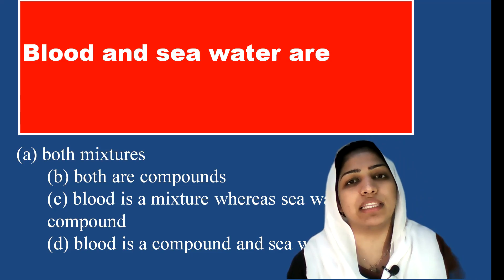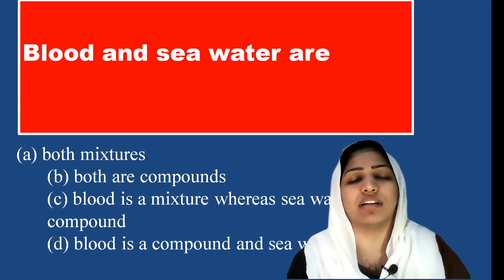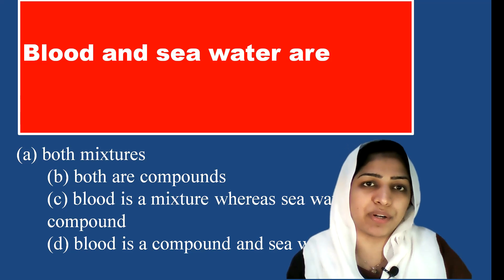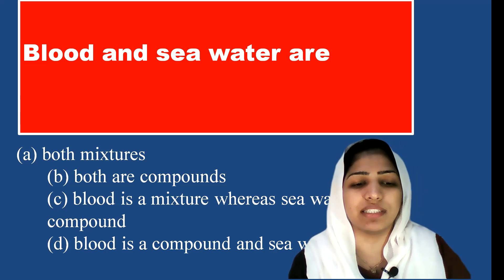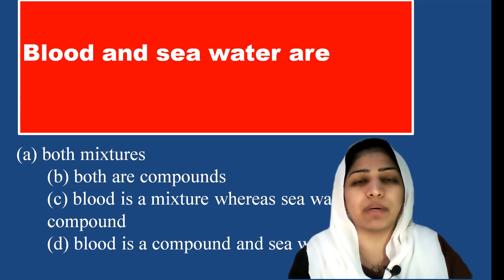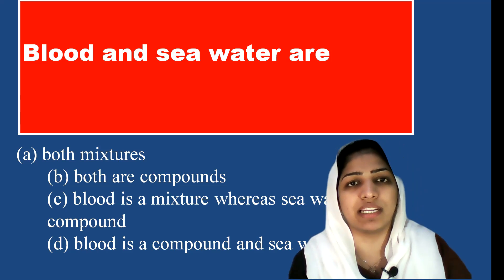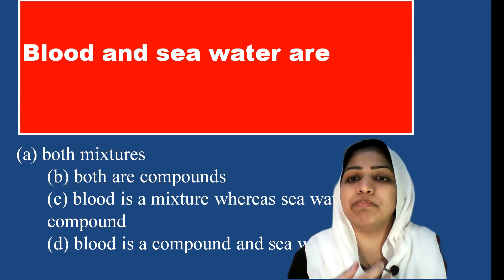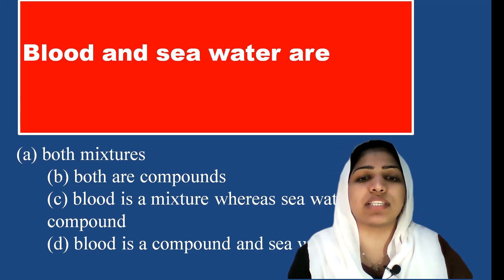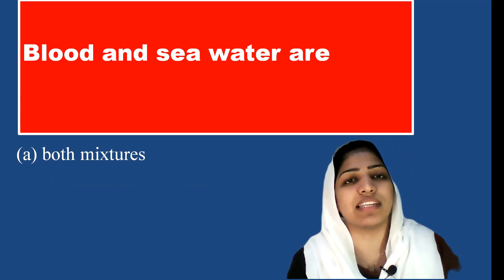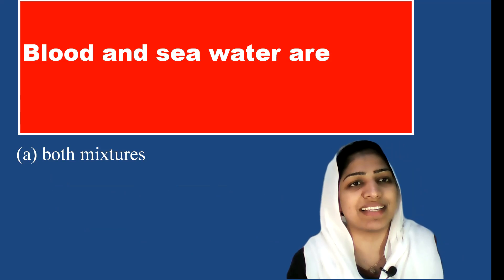Sea water is salt dissolved in water — it is also a mixture of different components. Therefore both blood and sea water are mixtures. Option A is the correct answer.